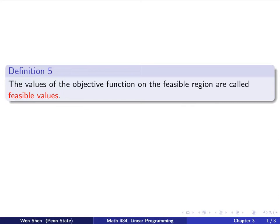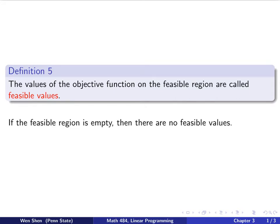We have Definition 5. The feasible values are defined as follows: the values of the objective function on the feasible region are called feasible values. One special case — if your problem is not feasible, that is, the feasible region is empty, then there are no feasible values; that set of feasible values will also be empty.